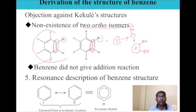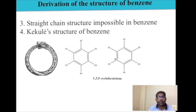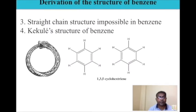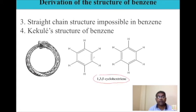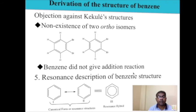Another limitation is that benzene does not give addition reactions. Kekulé proposed that benzene has conjugated double bonds with fixed positions, as in 1,3,5-cyclohexatriene. So if benzene has conjugated double bonds, why does it not give addition reactions like an alkene? This was another limitation of the Kekulé structure.